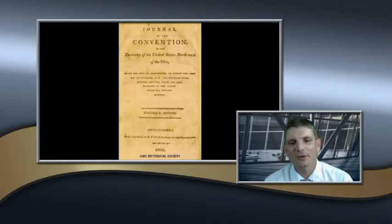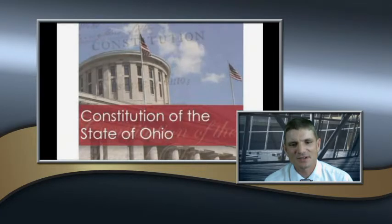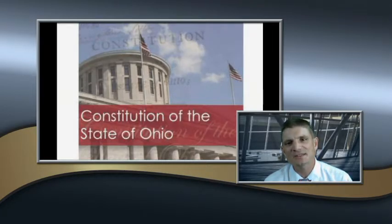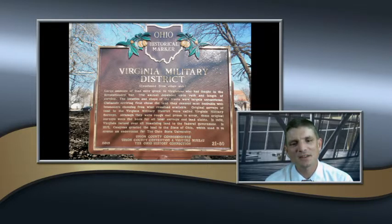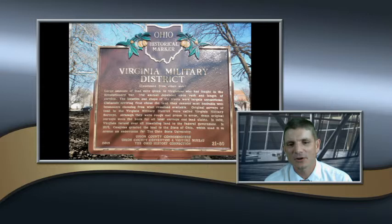Political leaders in Ohio wrote Ohio's first constitution so Ohio could become a state. Ohio's constitution was modeled after the U.S. Constitution. Some land from the Northwest Territory was granted to Revolutionary War veterans as compensation for their service.